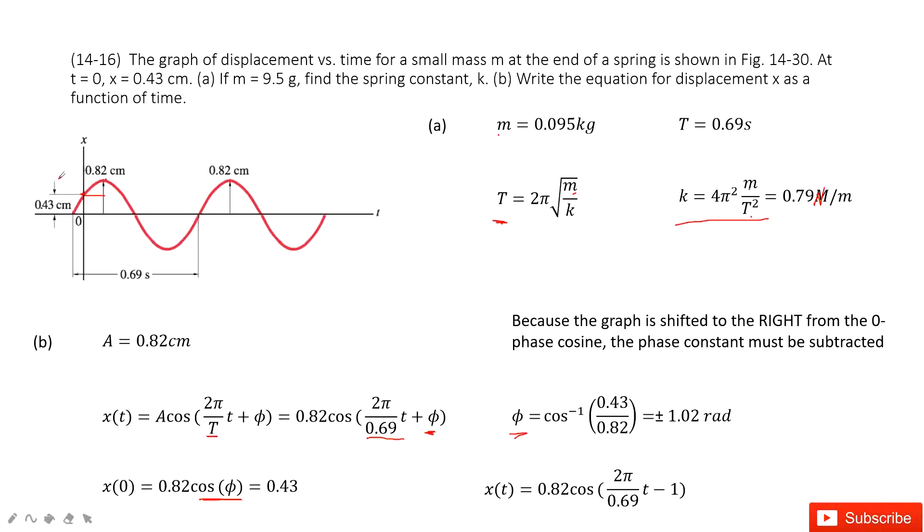Then we look at the picture. The picture tells us it is shifted to the right. Because initially this peak is at zero, and it shifted to the right. So we choose the negative side. There we choose the negative one.